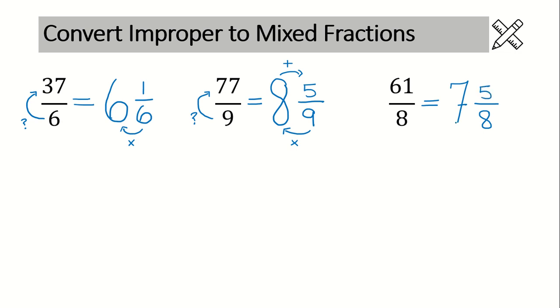And then once again, convert this mixed number back to an improper fraction to see if you've done it correctly. Multiply denominator by whole number. Eight times seven is 56. Add five to get 61. These are equivalent.